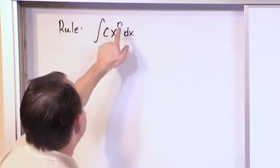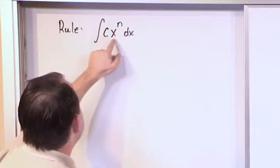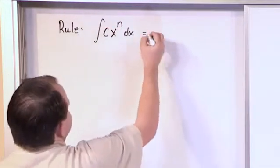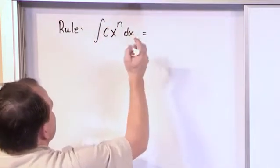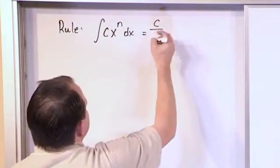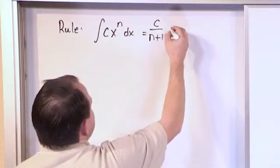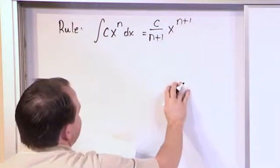So this could be 5x squared, or this could be 5x cubed, or this could be negative 3x to the fifth power, or something like this. Then the way you do the integration is as follows: you take the constant, which can come out of the integral, you take the constant and divide by n plus 1. And then you take x and you raise it to the power of n plus 1, and that is the answer.